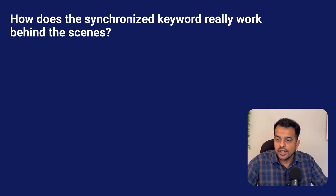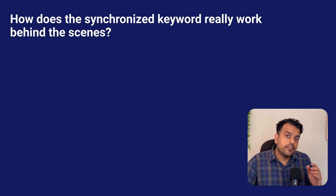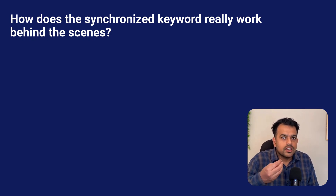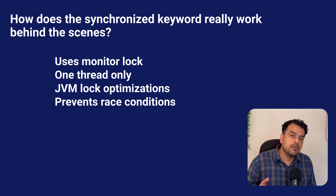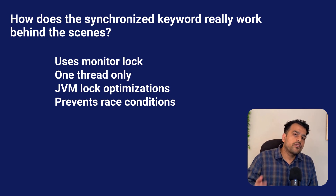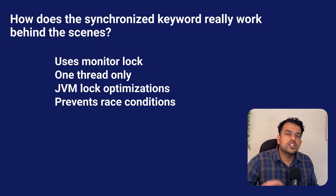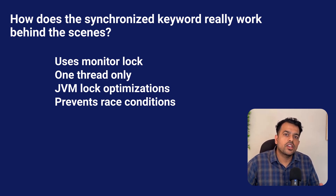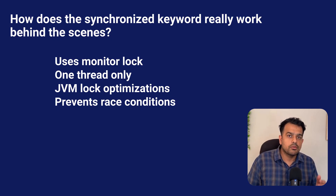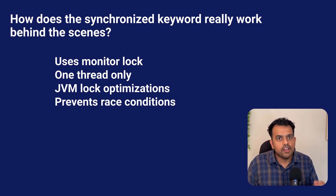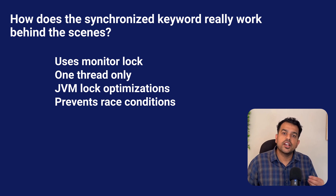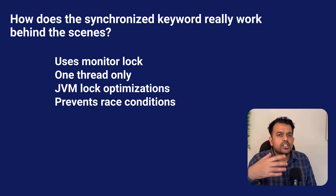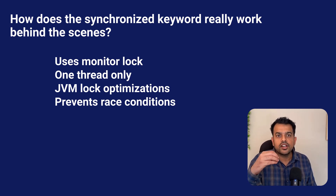The next question is: how does the synchronized keyword really work behind the scenes? Synchronized is not just a lock — it works with something called a monitor. When a thread enters a synchronized block, it acquires the monitor of that object. No other thread can enter a synchronized block using the same monitor until the first thread exits. This prevents race conditions by giving exclusive access. Under the hood, the JVM uses techniques like biased locking and lightweight locking to make it faster — these optimizations try to avoid heavy OS-level locks when possible. But if there is real contention, the lock becomes heavy and causes blocking. Synchronized is very simple to use but very complex internally, and that's why understanding the monitor is valuable.